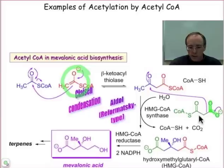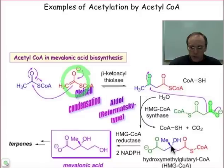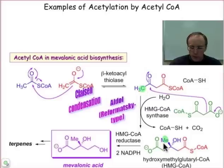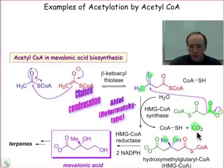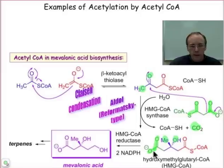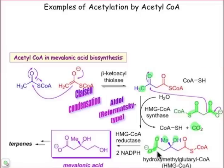That nucleophile does an addition to this carbonyl group — a nucleophile addition to a polarized pi bond — creating a new tetrahedral center. To keep track of things: this methyl group is the methyl group shown there, and the oxygen atom of the carbonyl becomes the hydroxyl group here. Decarboxylation took place — this carbonyl group was lost, which is where the CO2 came from. Additionally, the thioester was hydrolyzed to the carboxylic acid in this Aldol-Reformatsky type reaction.